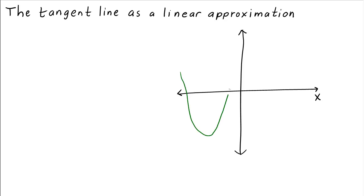Let's say f is a function whose graph looks like this. This f is a fairly complicated function, but let's imagine we only cared about f for values of x near some particular value — let's say this value here, let's call it a. If we only care about the behavior of f in some small region around a, we can come up with a simplified approximation for f.